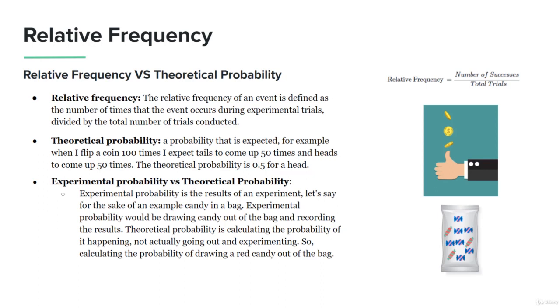You're not necessarily doing the actual experiment - that's theoretical probability. With experimental probability, you're actually doing the experiment. That's the difference between experimental and theoretical probability.